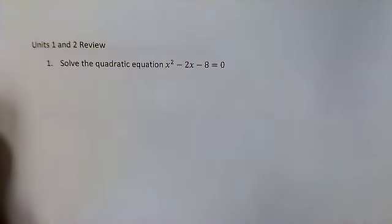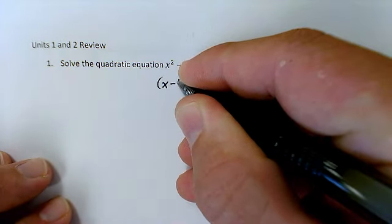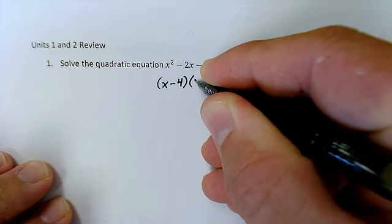Alright, here's the review for this unit. On this first problem, we're solving the equation. I'm actually going to do this a way that I didn't do too much in class where I actually factor this at first, and so this would factor to (x - 4)(x + 2) = 0.